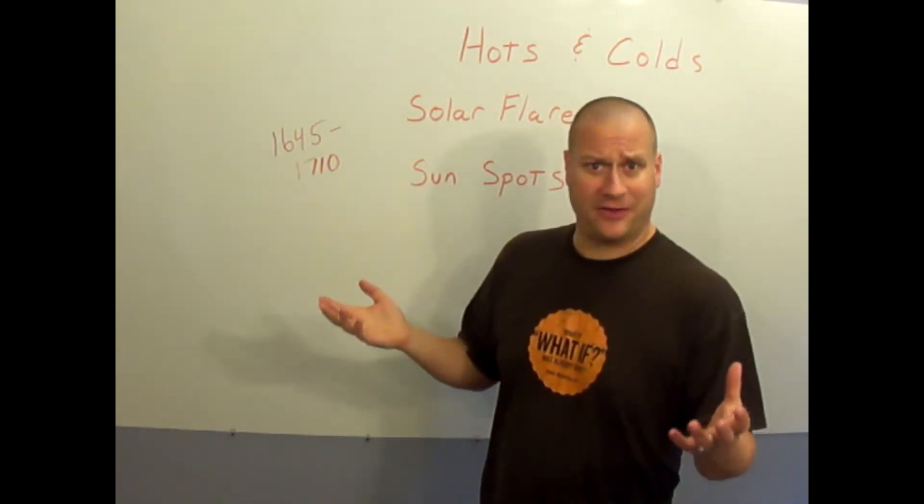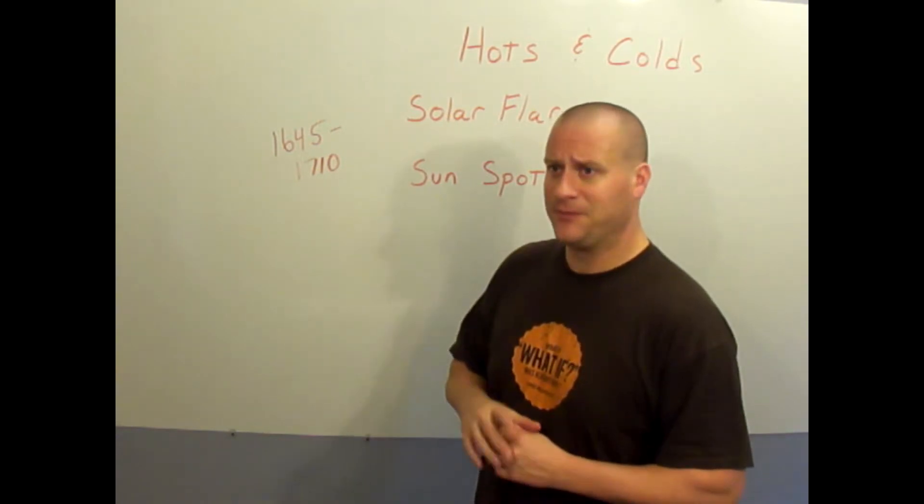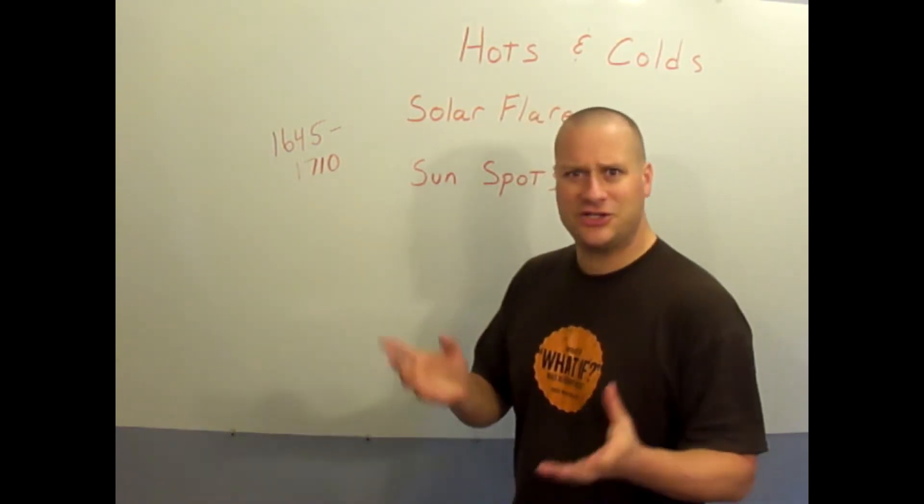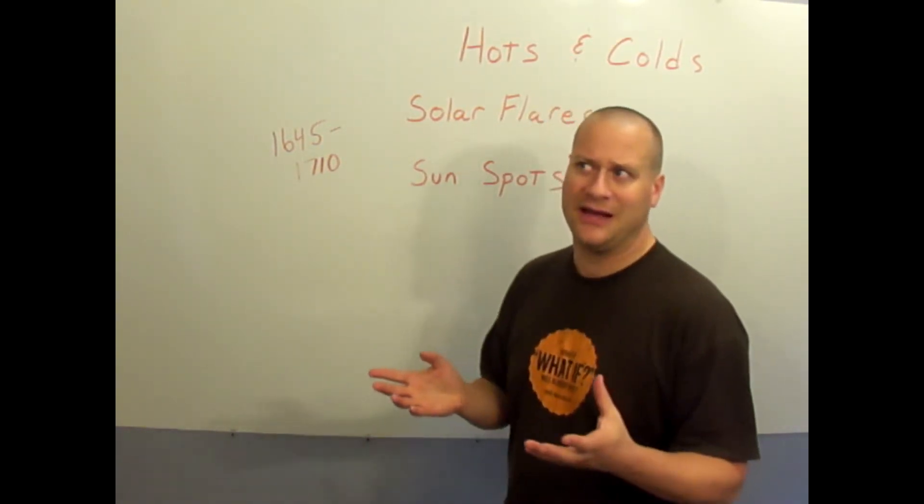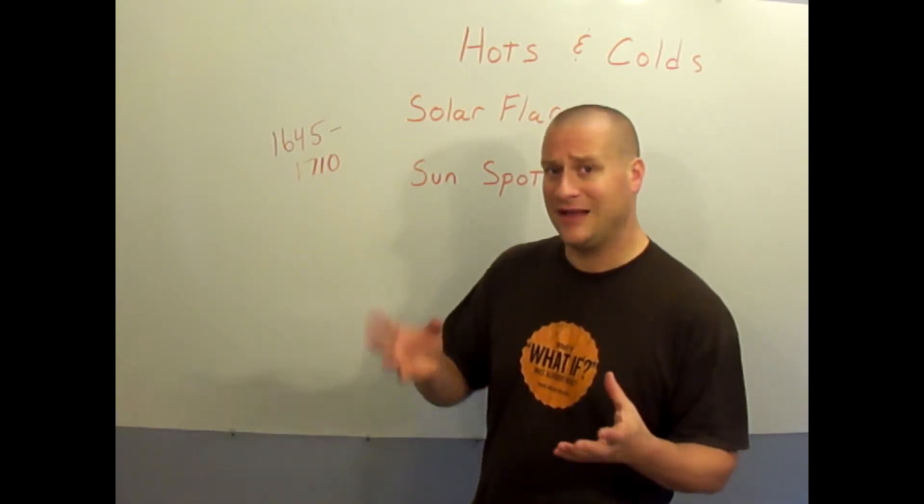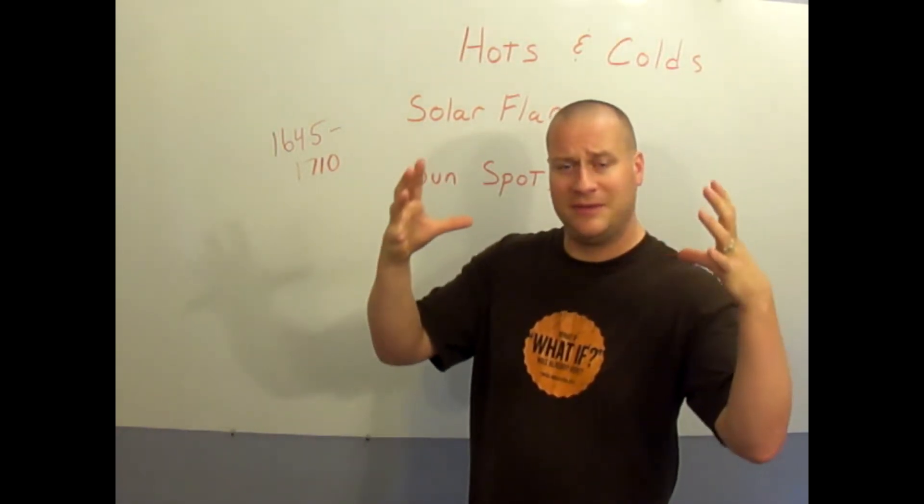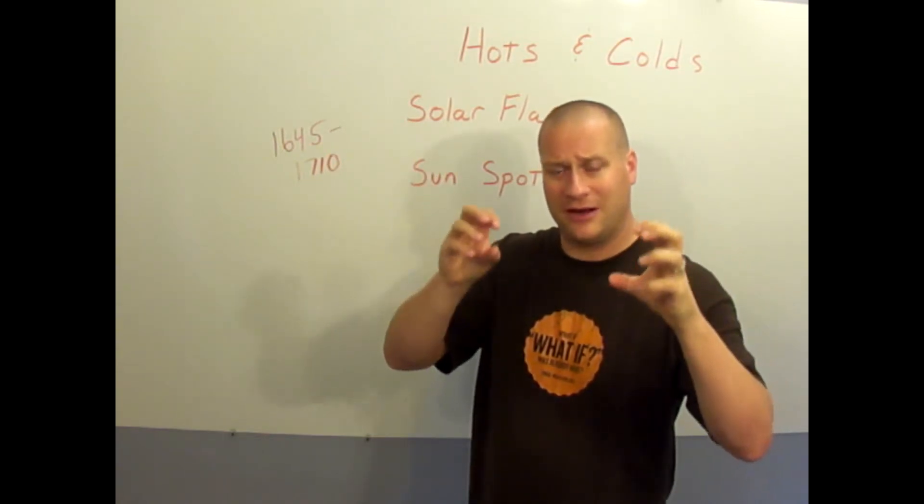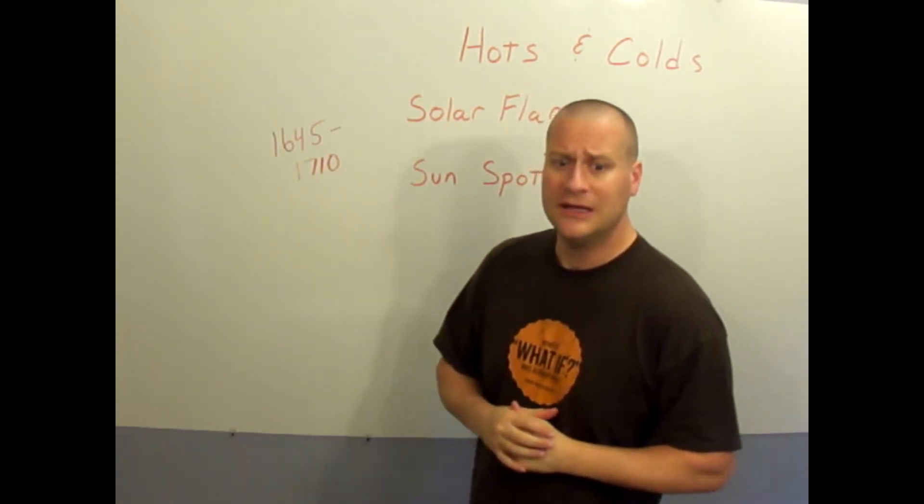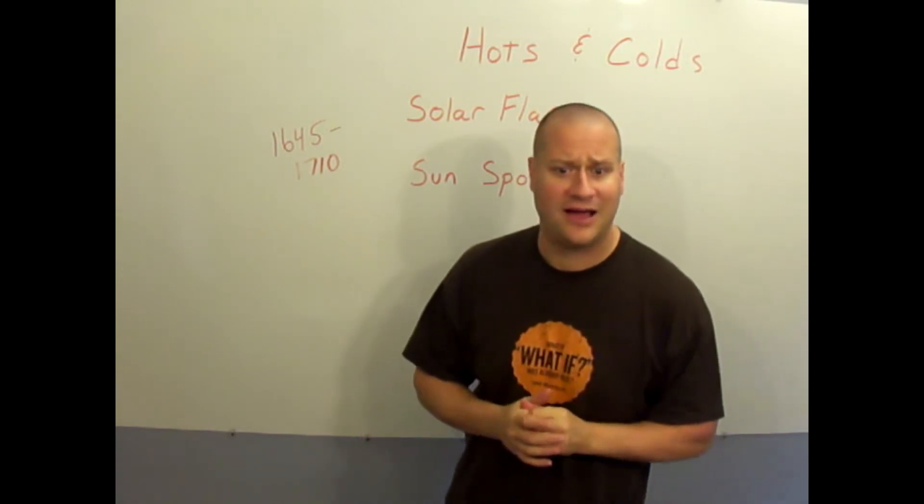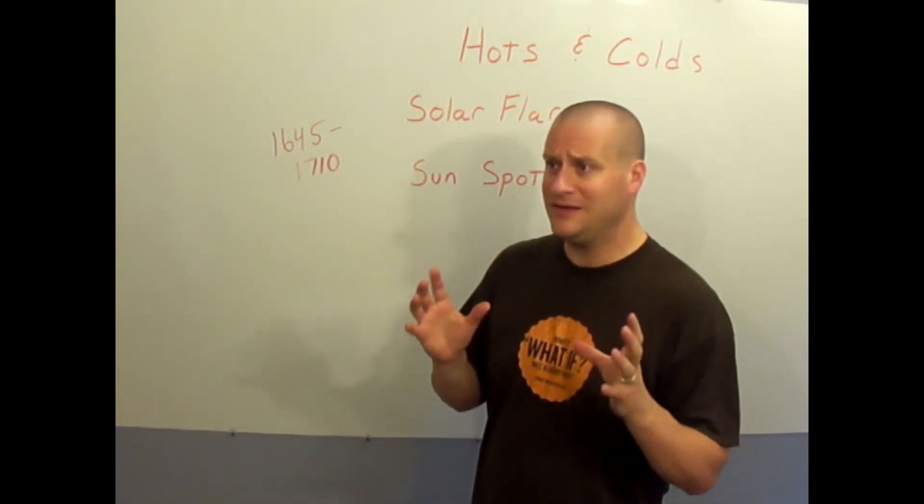They figure maybe it might be about a 3,000 degree difference. Now they're not sure, but observation is telling them that it may be that it's not that the parts are getting cooler but that the sun can be hotter at certain times that would make other parts relatively cooler. Between 1645 and 1710 they made these observations that there were no sunspots in those years that they observed.